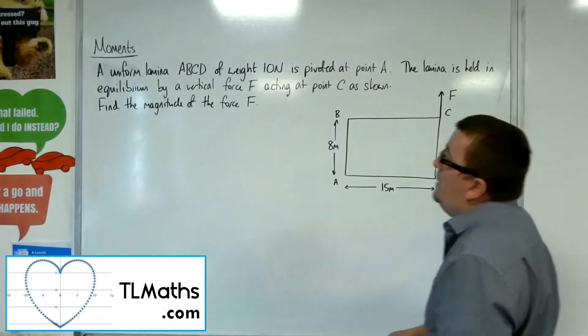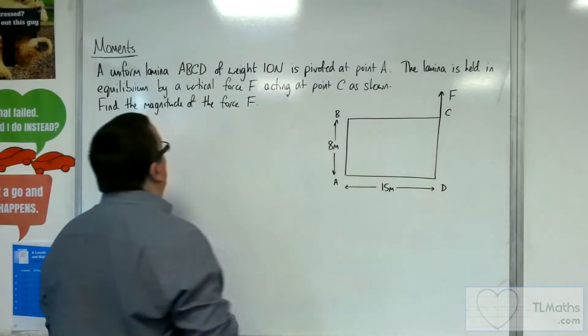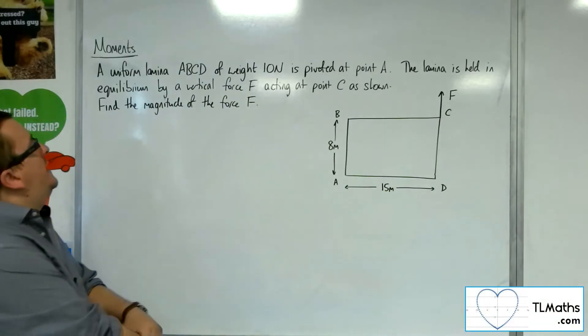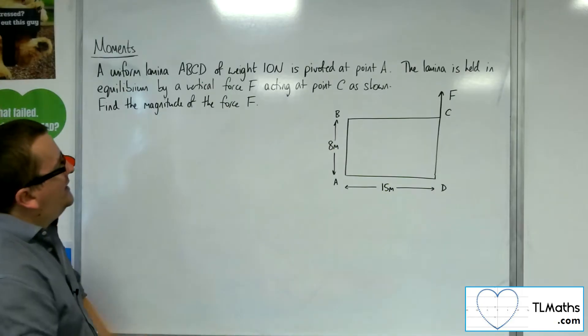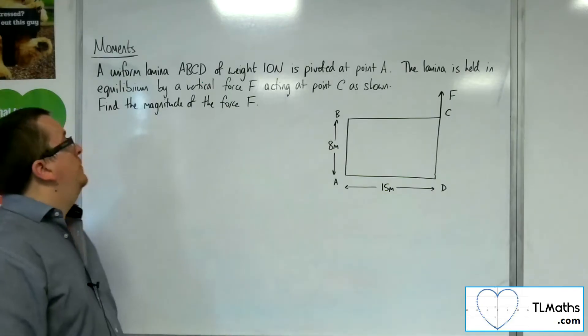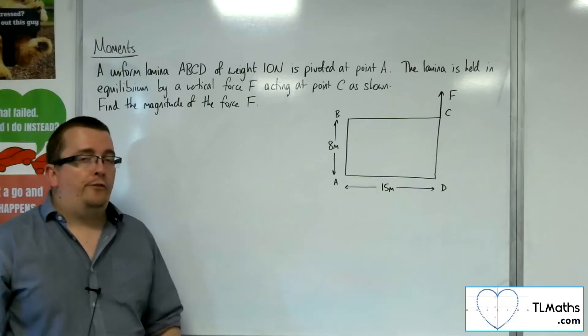In this video we've got a uniform laminar ABCD of weight 10 newtons pivoted at point A. The laminar is held in equilibrium by a vertical force F acting at point C as shown. Find the magnitude of the force F.